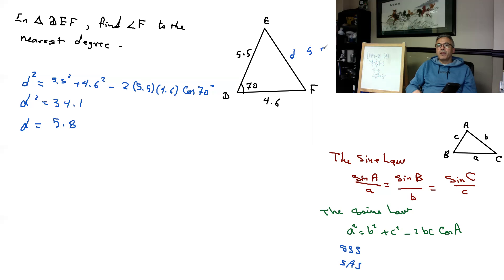Now if this is 5.8, then I can go ahead and use the sine law to find angle F. If I want to find angle F, then I should start with sine F over 5.5—because that's the side opposite angle F—equals sine 70